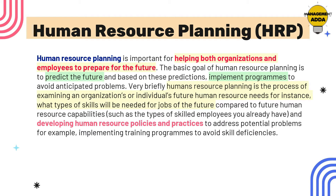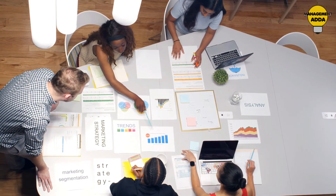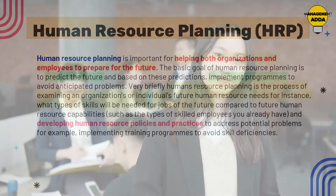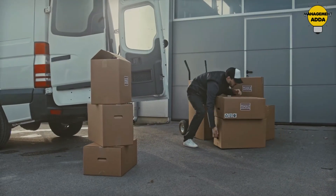Human resource planning is a process that identifies current and future human resource needs for an organization to achieve its objectives. It should serve as a link between human resource management and the overall strategic plan of an organization. HRP is a continuous process of systematic planning ahead to achieve optimum use of an organization's most valuable asset — its employees — because without employees it is difficult to think of producing or starting any manufacturing process or services.